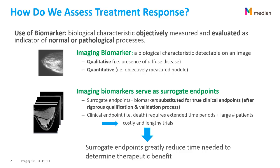One of the main examples of a biomarker is body temperature. If it is too high or too low, we know that there is something wrong. It has been proven and validated on patients and is now widely used. An imaging biomarker is a biological characteristic that is detectable on an image. It can be qualitative — such as the presence of diffuse disease, a yes or no answer — or quantitative, providing an objective measure such as the size of a nodule.